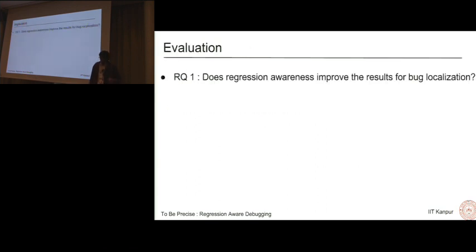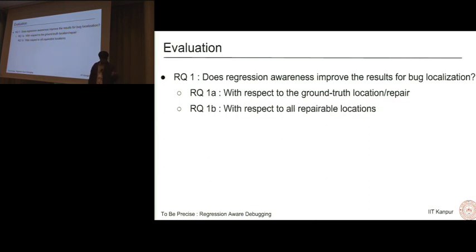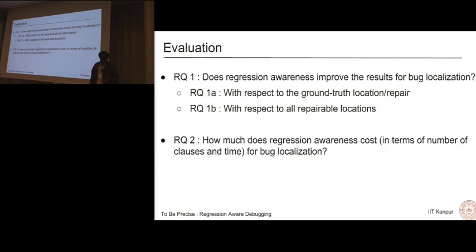Our first research question is: does regression awareness actually improve the results for bug localization? We split this into two parts. One is with respect to the ground truth location for repair. So as I said, TCAS as an example had researchers injecting faults. So we really know what the actual repair is. So we evaluate first with respect to that. The other is with respect to all repairable locations. I will get to this. The second research question is: how much does regression awareness cost us, in terms of clauses and the solving time?